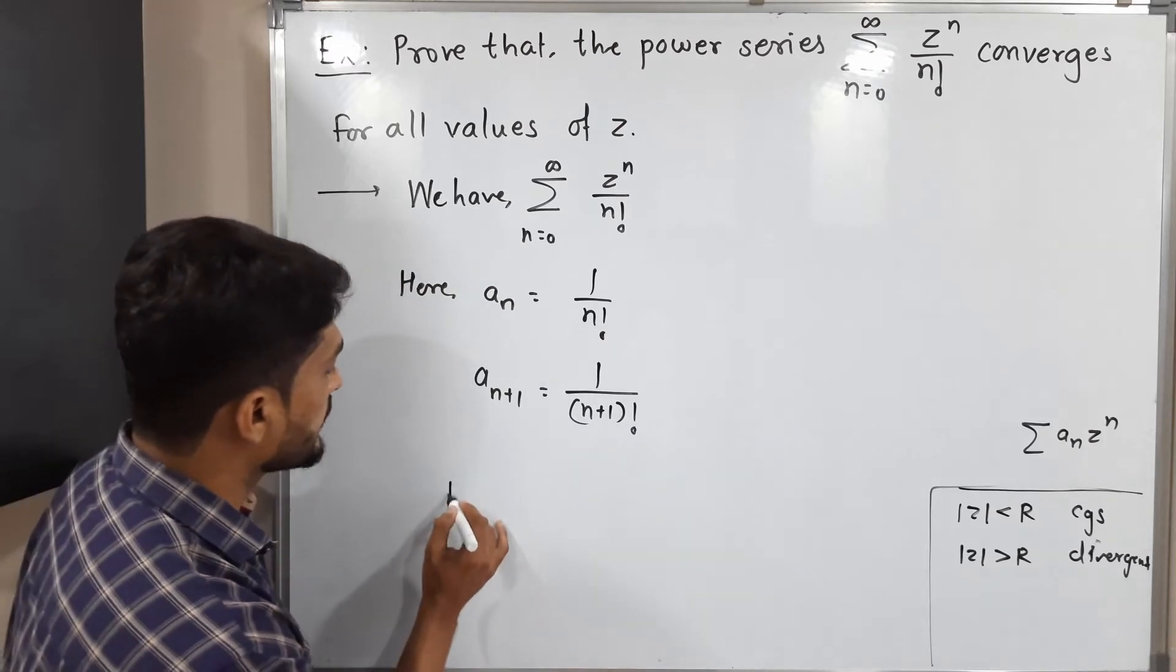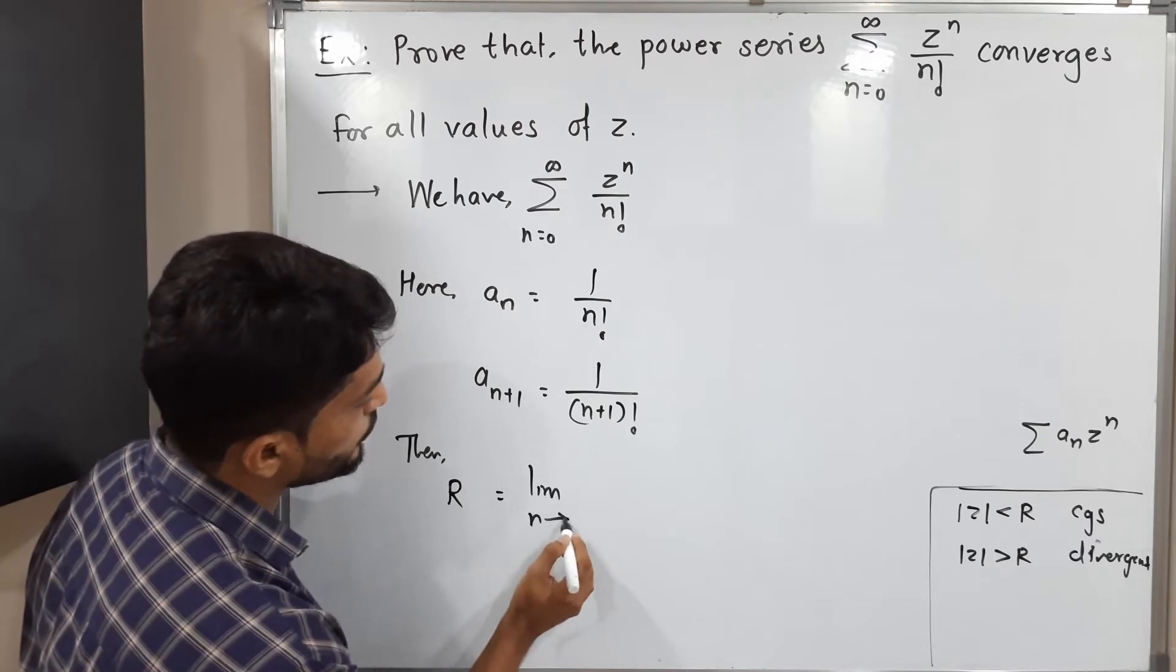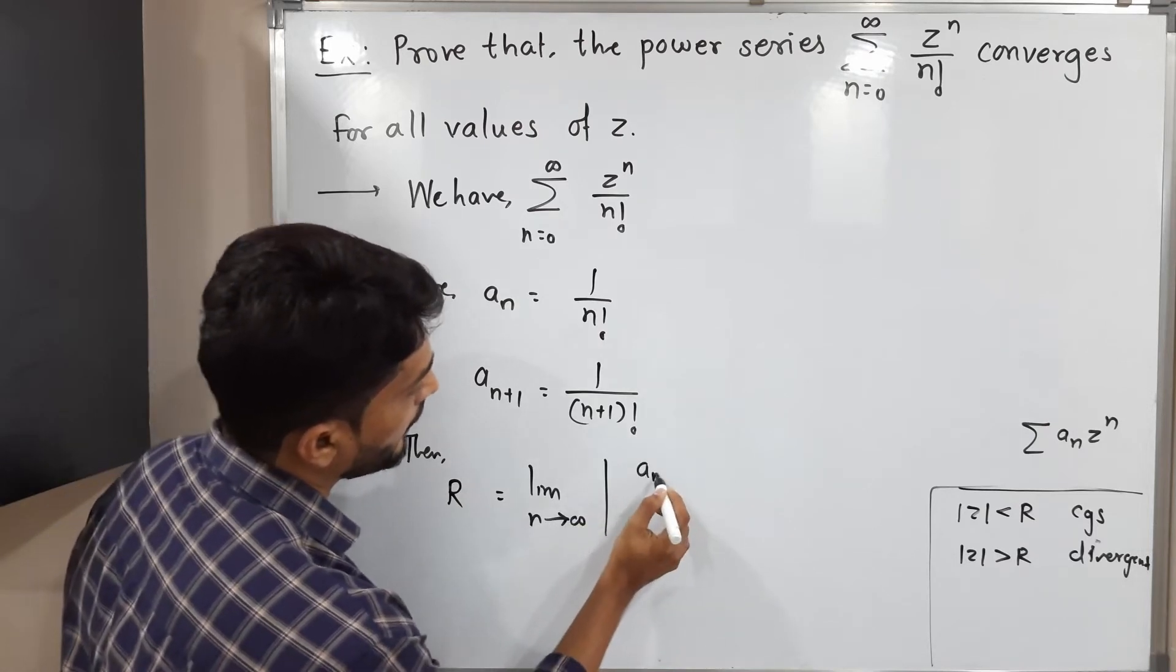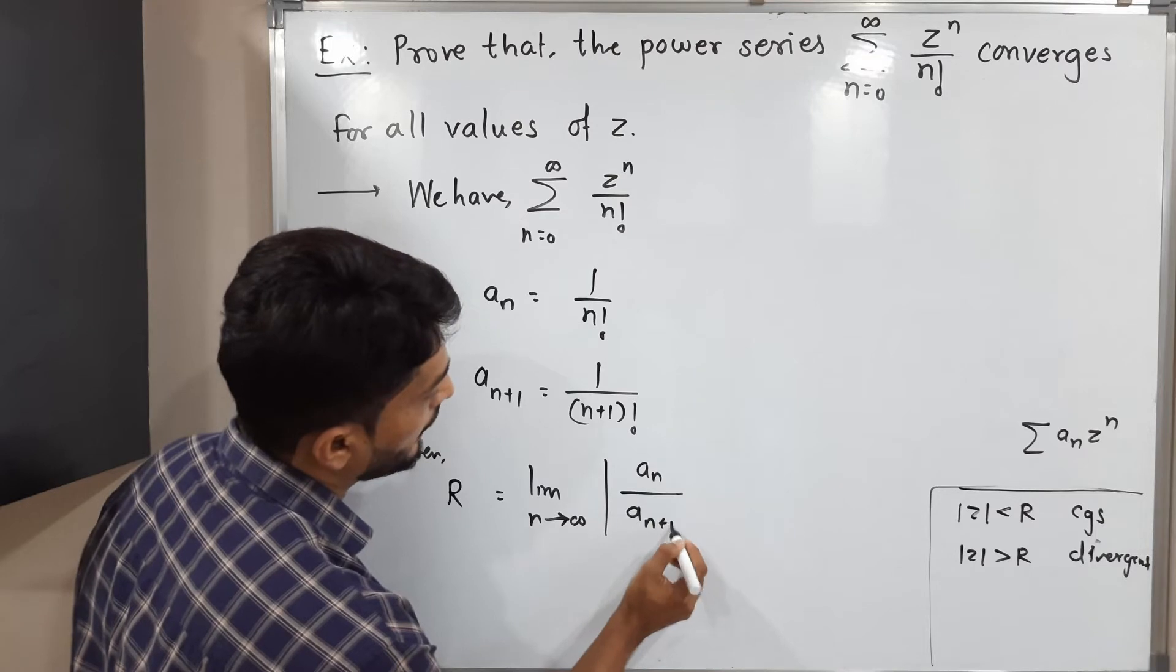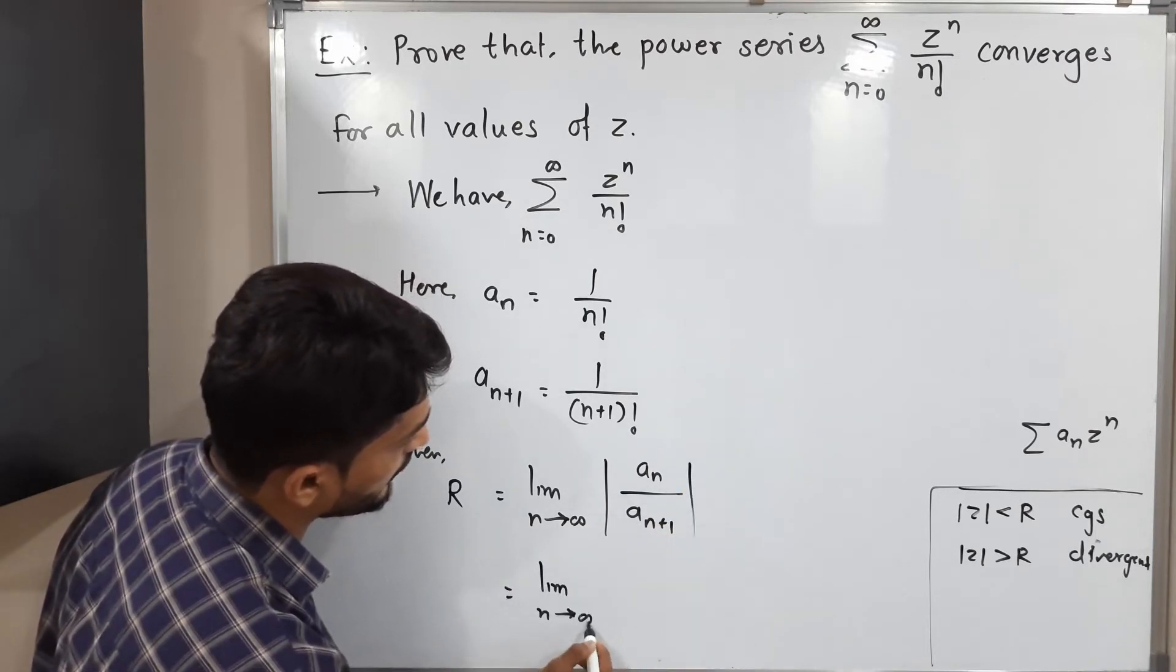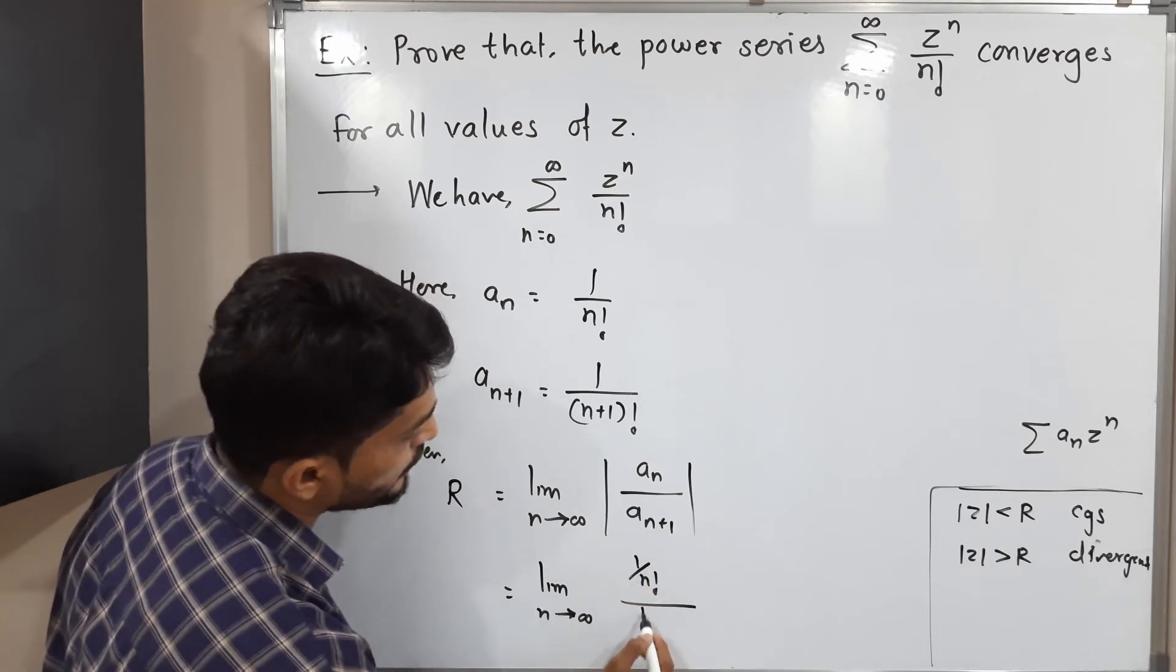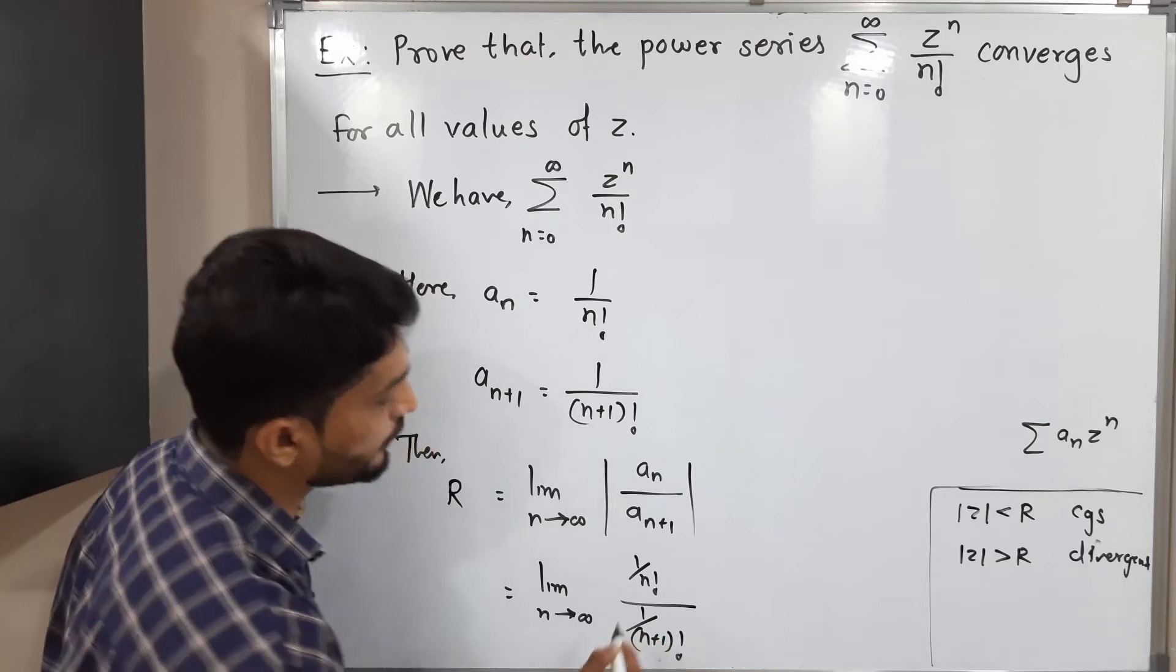So the formula of r is limit n tends to infinity mod a_n upon a_{n+1}. Let us put the values. Limit n tends to infinity, a_n is 1 upon n factorial, a_{n+1} is 1 upon n plus 1 factorial.